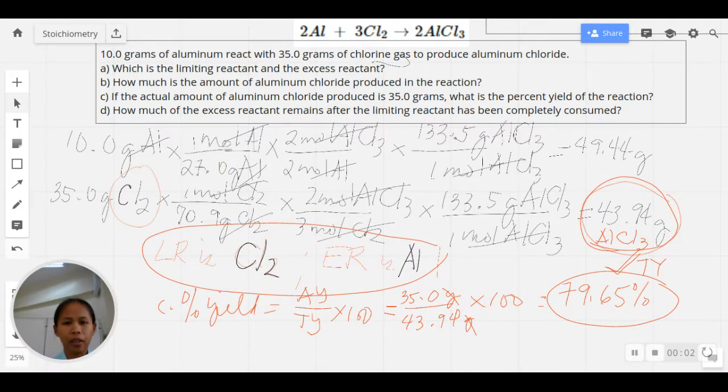In the last video about getting your LR and ER and then the percent yield of the reaction, we ended up with this problem on your screen in which aluminum reacted with chlorine gas producing aluminum chloride. The equation is already balanced, and we were able to identify our LR and ER based on mass-to-mass calculation. We calculated the mass of aluminum chloride for part B, which became our theoretical yield, and then calculated the percent yield in letter C given the actual amount of aluminum chloride, which is 35 grams.